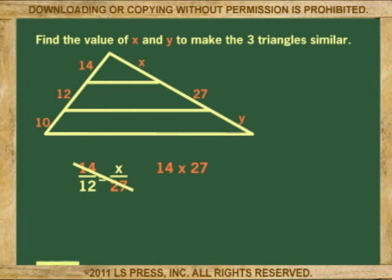We cross multiply 14 and 27, and divide the result by 12. We get 31.5. To make the top two triangles similar, x has to be 31.5.